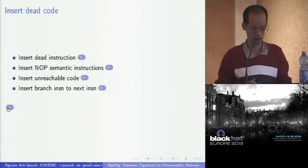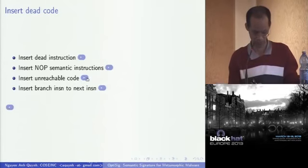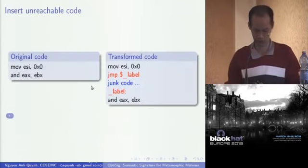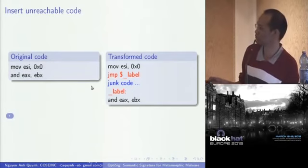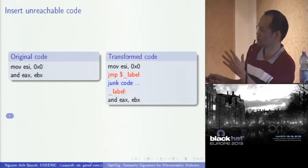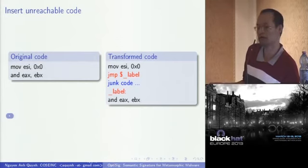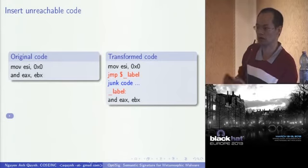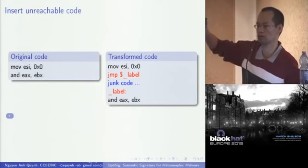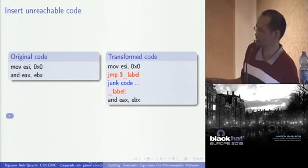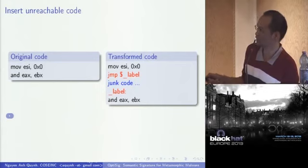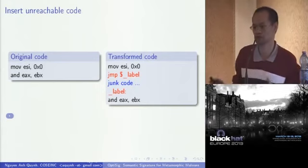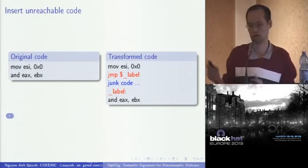The third method is insert unreachable code. On the left side, the original code. When it transforms itself, it inserts a jump label and in between inserts junk code, which can be arbitrarily long. This junk code is not executed — it's unreachable. But the left side and right side look very different, even though they do exactly the same thing.